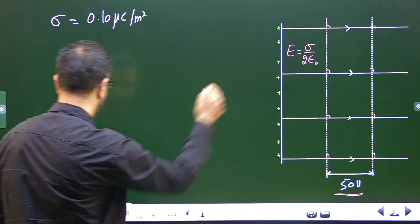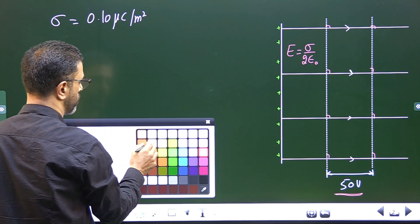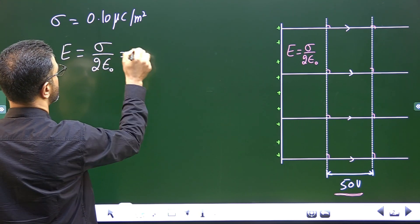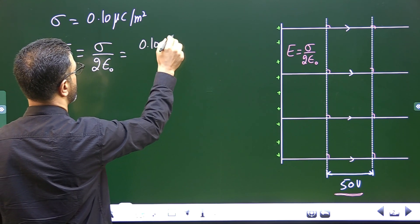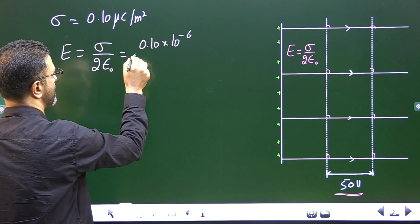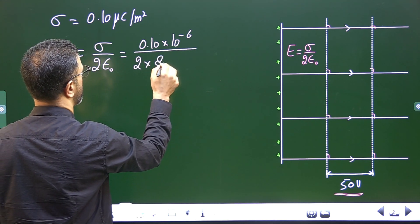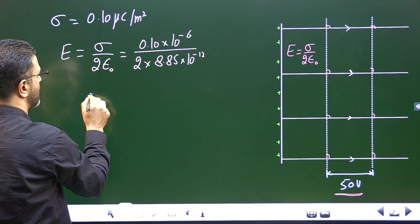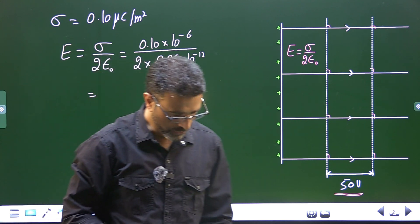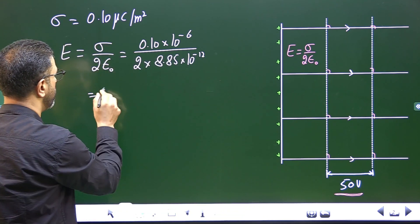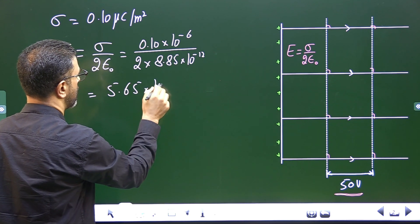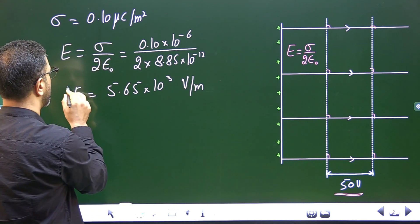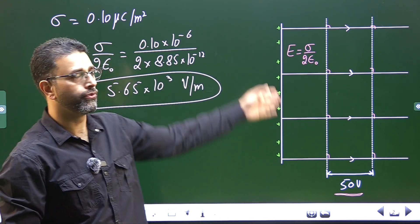The electric field is given by E = sigma divided by 2 epsilon-naught. Sigma is 0.10 micro coulomb per meter squared, which is 10 to the power minus 6 coulombs per meter squared. Dividing by 2 times epsilon-naught, which is 8.85 times 10 to the power minus 12, this comes out to be 5.65 times 10 to the power 3 volts per meter. This is the electric field developed by the uniformly charged sheet.